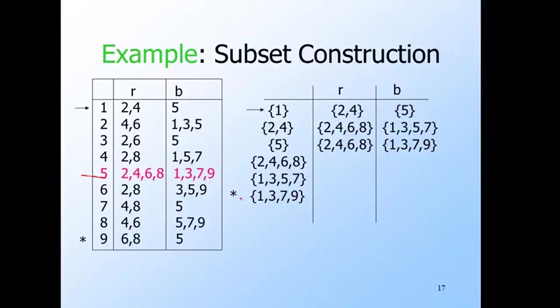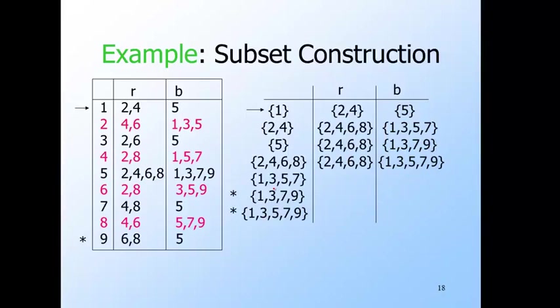For the row for {two, four, six, eight}, I've marked the relevant rows in the NFA table. On R, taking the union of transitions from states two, four, six, eight on R gives {two, four, six, eight} — a state we've seen already. On B, the union of transitions from those states gives one, three, five, seven, nine. That's a new state, so I add it to the list of rows to construct. It's also a final state because it contains nine.